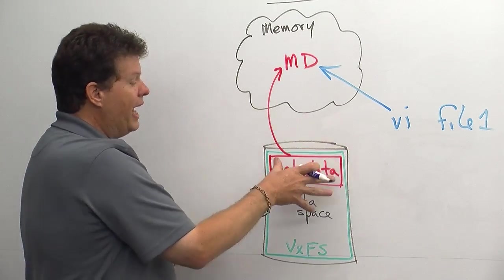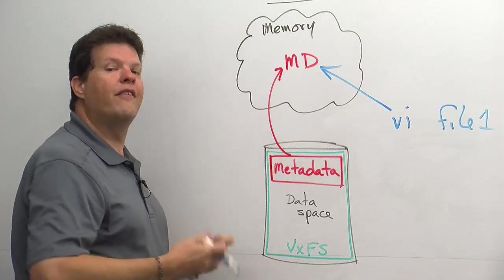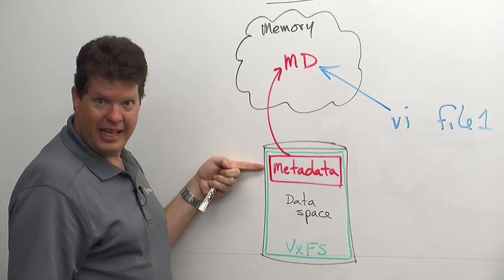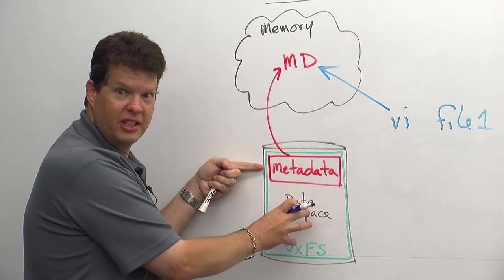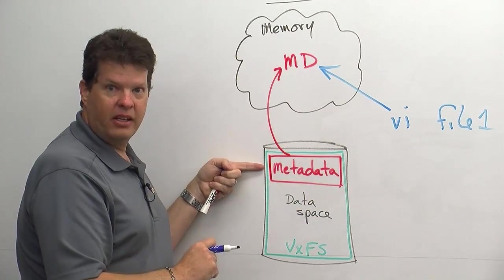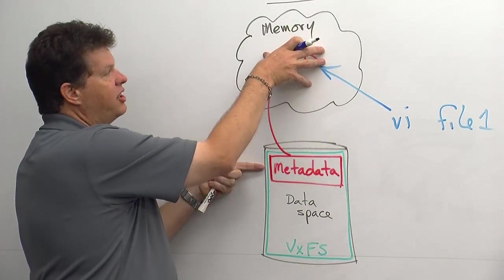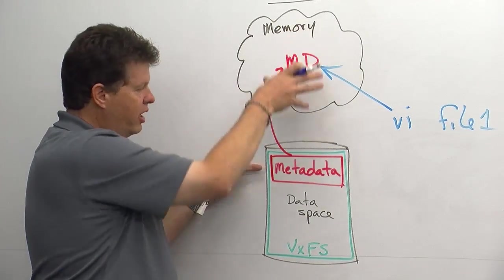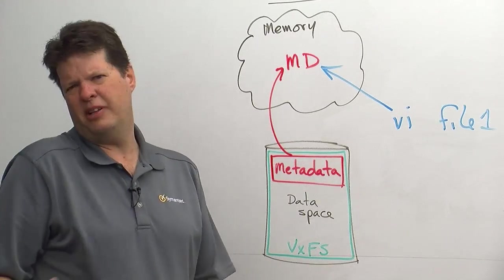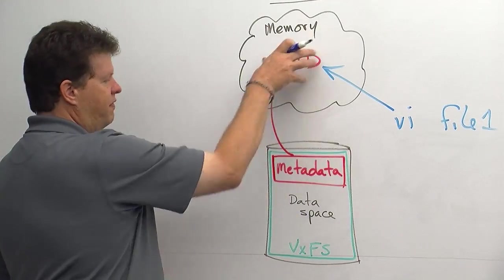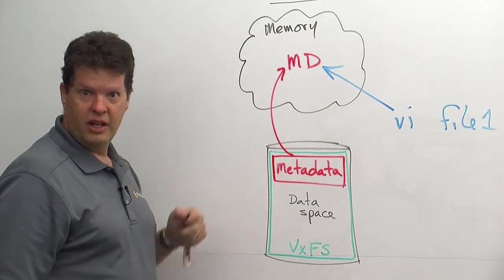So, if I unmount this file system, we have to ensure that the metadata on disk, that is our roadmap for where the data is in the standard file system, has to be up to date. So, we have essentially a flushing process that's going to flush the metadata changes that are in memory to disk. And this also happens periodically, typically every 30 seconds.